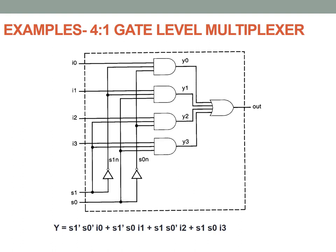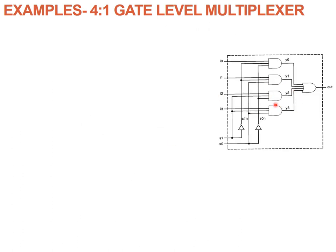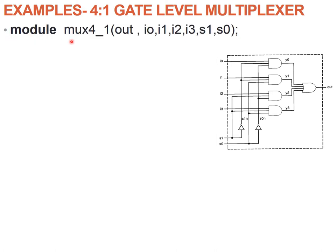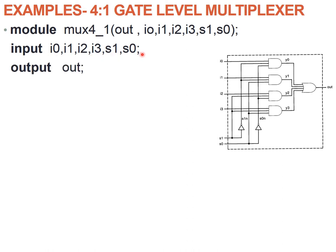Now let us start writing the gate level description of the multiplexer. Every module begins with the keyword module followed by the module name and the list of ports. The module name is MUX4_1, followed by the list of input and output variables: OUT, I0, I1, I2, I3, S1, S0. Then we declare inputs using the keyword input for I0, I1, I2, I3, S1, S0, and declare output OUT. All are one-bit signals with no vector declarations.